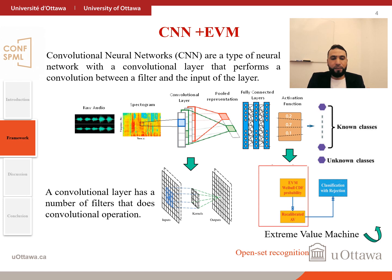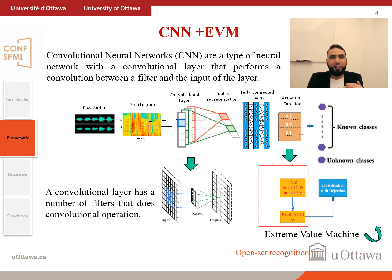A convolutional layer is a layer that has a filter performing convolutional operations. For the activation function, normal or traditional activation functions use softmax. In this method, we use an extreme value machine with Weibull probabilities. As seen in the bottom of the figure, the extreme value machine uses a threshold for either classification or rejection — so the output is either a known predefined class, or rejected as an unknown or novel class.